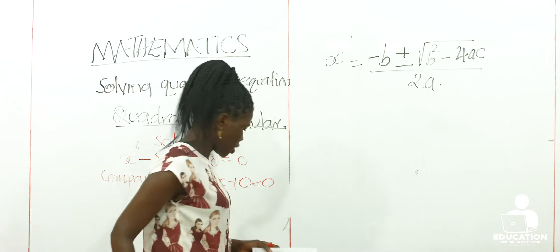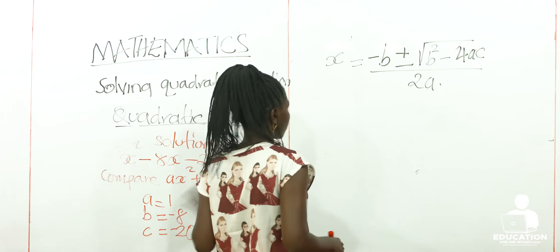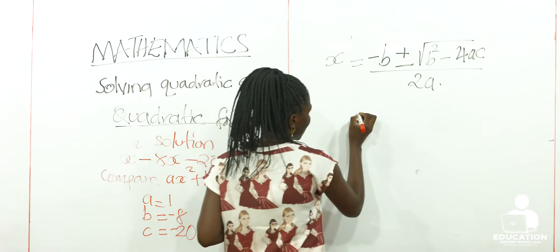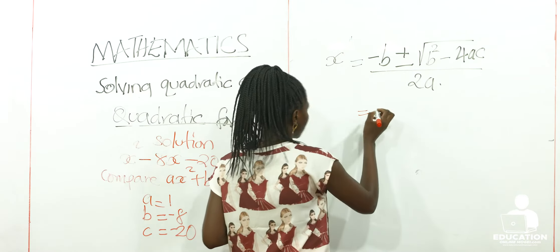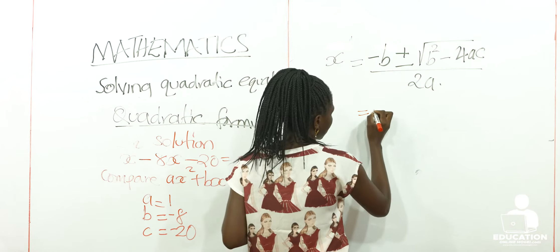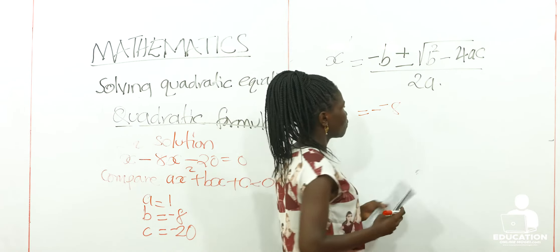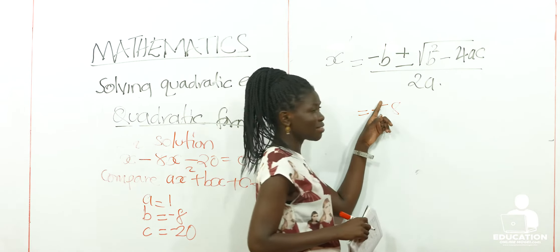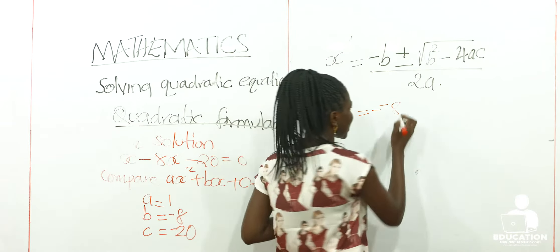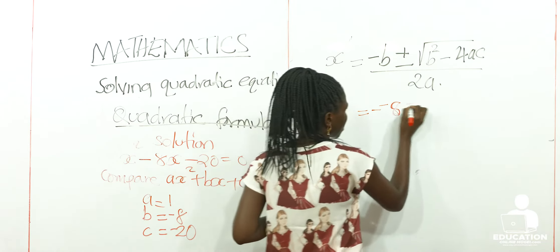Our value of B is equal to negative 8, and the value of C is equal to negative 20. After knowing that, we are going to use this information to place into the formula. Our value of B is negative 8, so it's going to be a negative negative because the formula originally has a negative sign, and the value of B also has a negative sign.